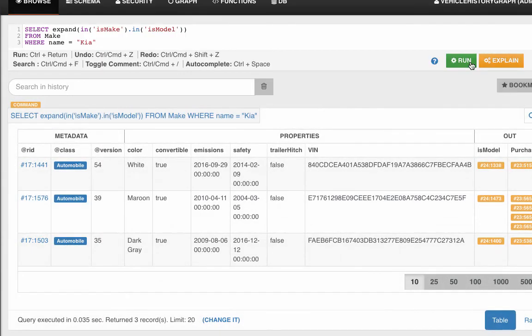So let's run. We see that we were returned three records. So there are three vehicles that are KIAs in our database.